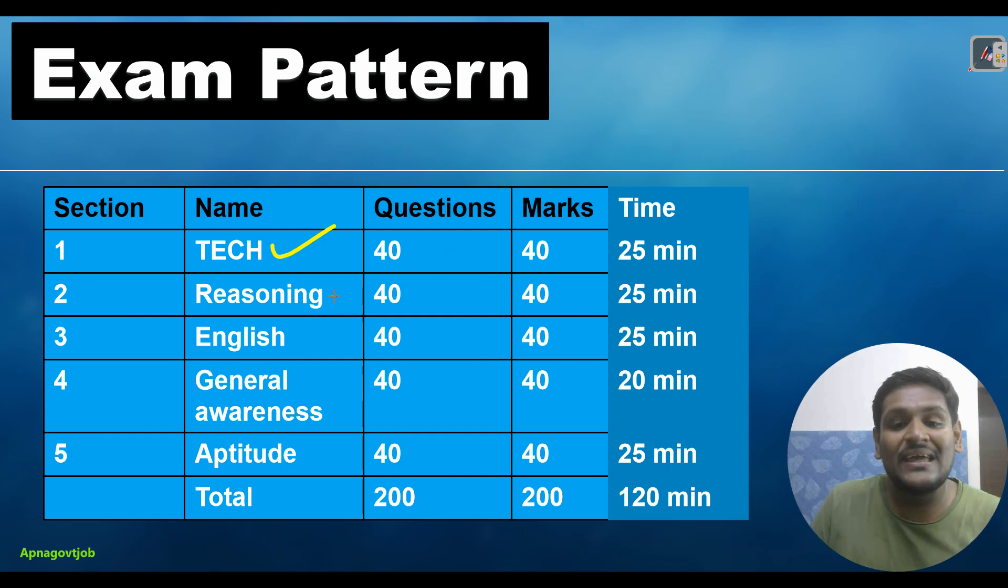The second section is reasoning, third is English, fourth is general awareness, and fifth is aptitude. So we have five sections in total.